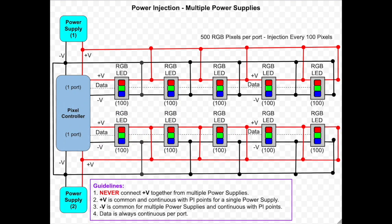In this example, it is similar to the previous example with two power supplies. The controller here can separate the power supplies by ports, normally one half of the ports for one power supply and the other half for the other power supply. Each RGB LED represents 100 pixels for a total of 500 pixels per port. Power injection is added after each 100 pixels.